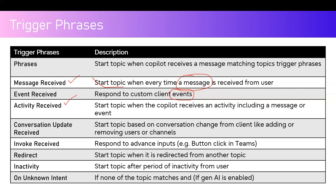Conversation Update Received starts a topic based on a conversation change from the client, such as adding or removing users or channels. If someone adds or removes a channel, you can start a topic based on that conversation change using the Conversation Update Received trigger.